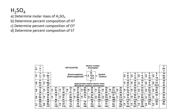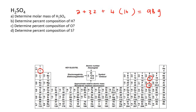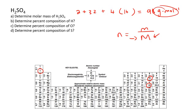Now let's look at H₂SO₄. We need to determine the molar mass of H₂SO₄. From the periodic table: two hydrogens, one sulfur with a mass of 32, and four oxygens each with a mass of 16. If you calculate this, you end up with 98 grams per mole — remember, molar mass is measured in grams per mole.